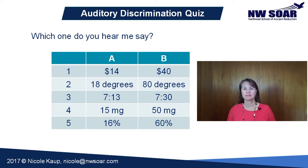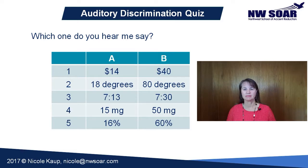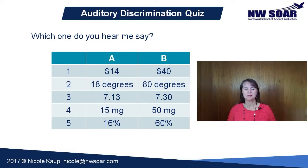Number one: $40 or $14? Number two: 18 degrees or 80 degrees? Number three: 713 or 730? Number four: 50 milligrams or 15 milligrams? And number five: 60% or 16%?